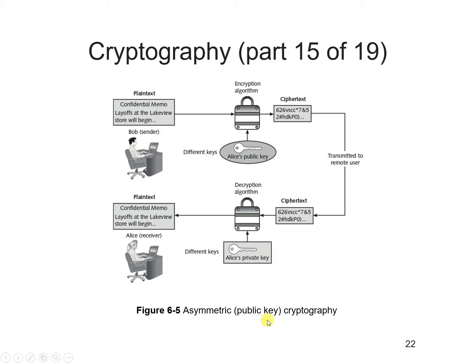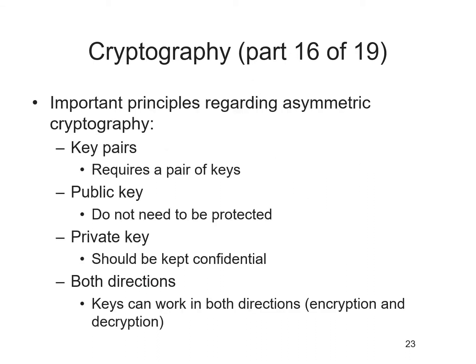Once Alice receives the document, she'll use her private key and Bob's public key to view it. Because you are using your public key, known to everyone, and your private key to decrypt, the message can be comfortably shared on the internet without any problem. There are some important principles regarding asymmetric cryptography, the first being key pairs — unlike symmetric cryptography that uses only one key, asymmetric requires a pair of keys.